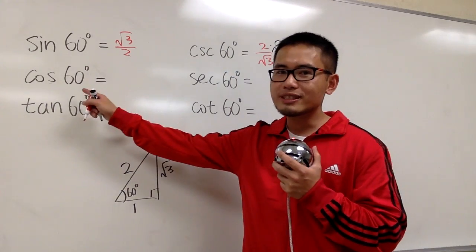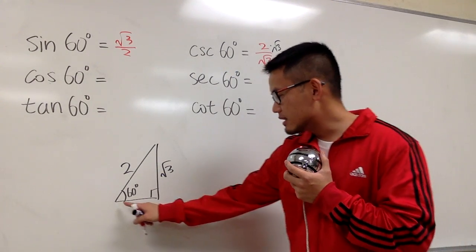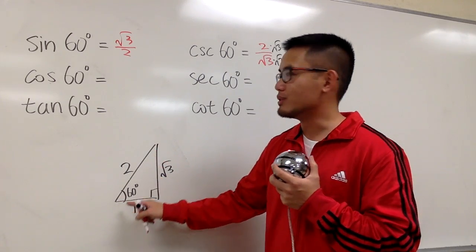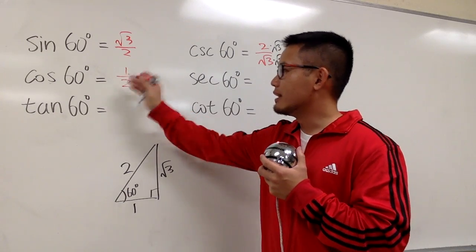Next, cosine of 60 degrees. Cosine is adjacent, which is 1 in this case, over the hypotenuse, which is 2. So, we have 1 over 2, like that.